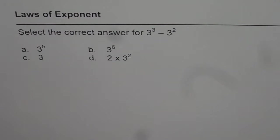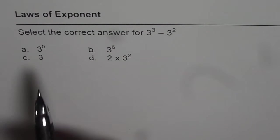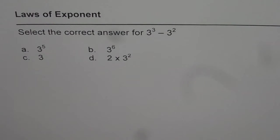3 cubed minus 3 squared is equal to 3 to the power of 5, 3 to the power of 6, 3 or 2 times 3 squared.